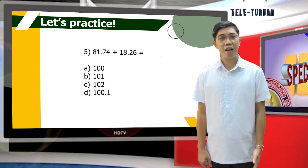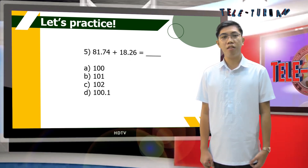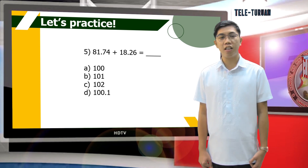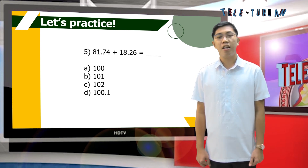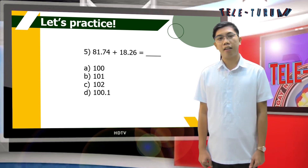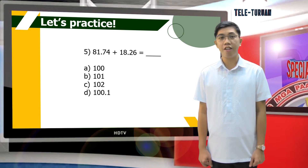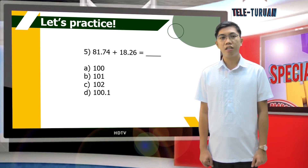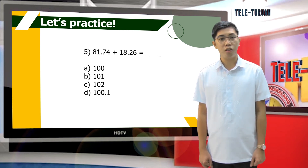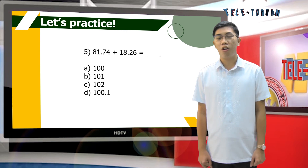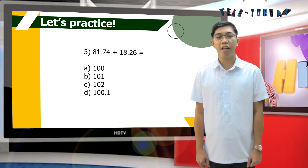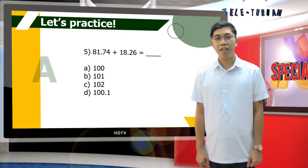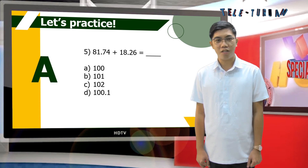Number 5: 81 and 74 hundredths plus 18 and 26 hundredths equals blank. A: 100. B: 101. C: 102. Or D: 100 and 1 tenth. A is the correct answer.